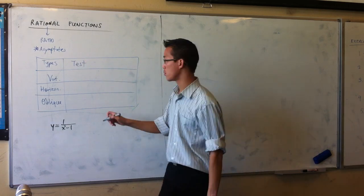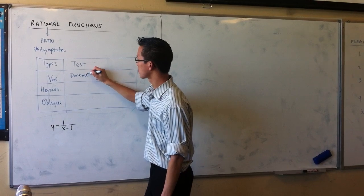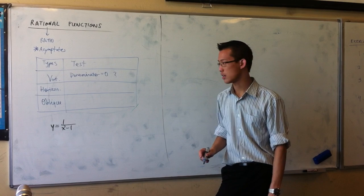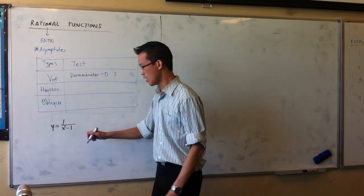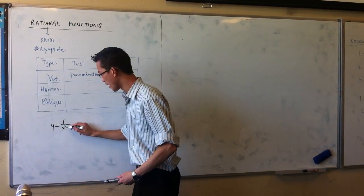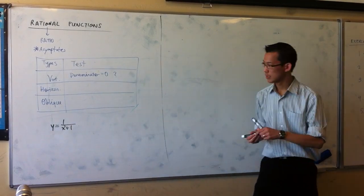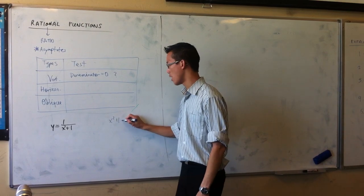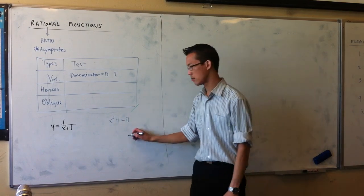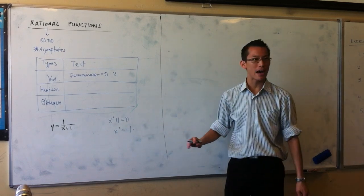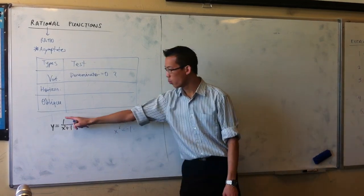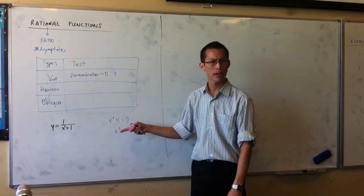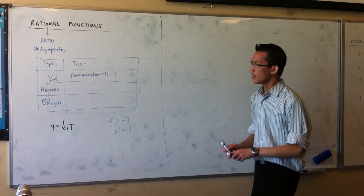The simple way of working out whether you have a vertical asymptote — because they don't all have one — is: can the denominator equal zero? For instance, if I change this to x squared plus 1, look at the denominator: x squared plus 1 — can it equal zero? It can't, because you can't find any real values that satisfy that equation. So y equals 1 over (x squared plus 1) has no vertical asymptotes, even though it's a rational function.